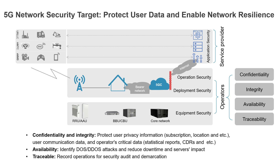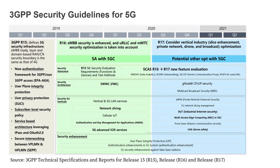Once you set up your objectives, you can plan different controls. These are the 3GPP security guidelines for 5G from 2019 to 2021, and even into 2022, and we are seeing different security measures. 3GPP has a strong focus on security in terms of how we can protect our network architecture. In Release 15, they introduced a new authentication framework for 3GPP and non-3GPP access, and they enhanced the 5G AKA process.